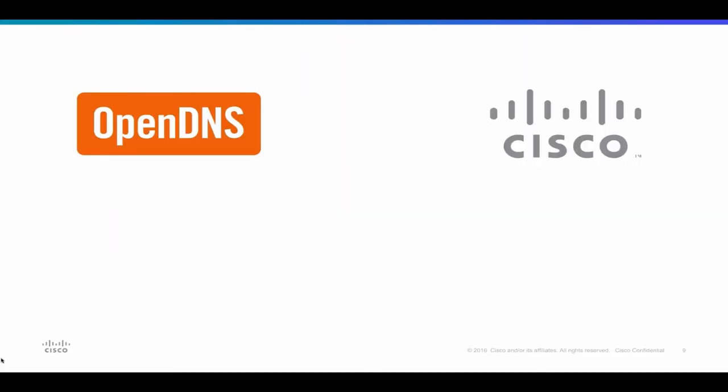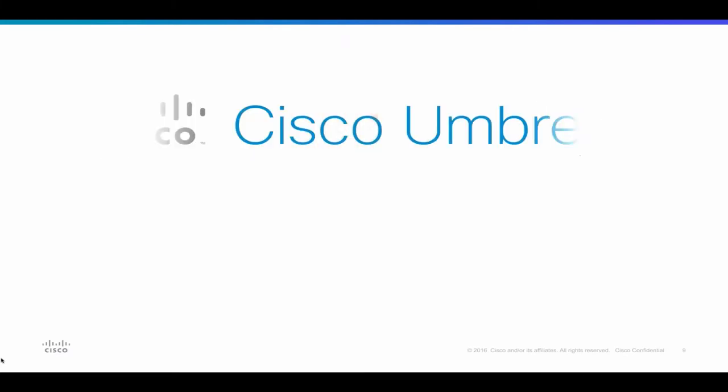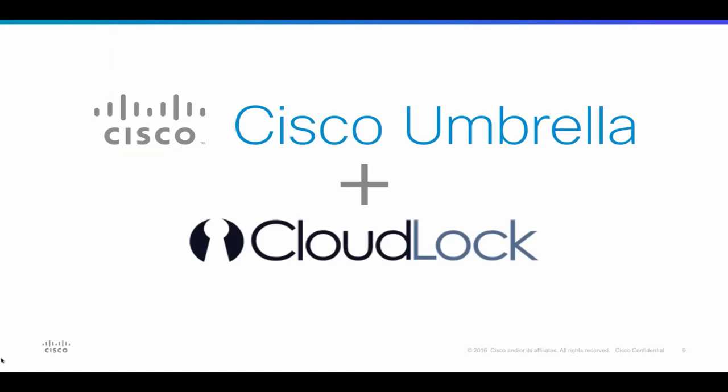That's really what OpenDNS Umbrella was traditionally designed to do. Cisco recognized these changes and acquired OpenDNS — hopefully many of you are familiar with the brand change we went through back in November — where Umbrella is now Cisco Umbrella. Cisco also acquired CloudLock to help with protecting those apps and the data and the users, because the data and apps are now in the cloud.